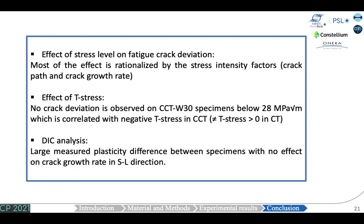In conclusion, most of the effect of stress level on fatigue crack deviation is rationalized by the stress intensity factors, whether for crack path or crack growth rates. No crack deviation is observed on CCT specimens below 28 MPa√m, which is correlated with negative T-stress in CCT specimens, in opposition to positive T-stress values in CT specimens. Finally, a large plasticity difference is measured between specimens with no effect on crack growth rates in the S-L direction.